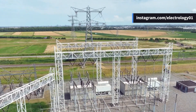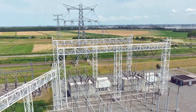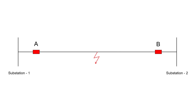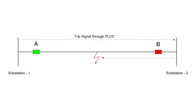Let's understand how this works in fault situations. Imagine a fault occurs in a transmission line. The relays at both ends — Station 1 and Station 2 — must trip their breakers to isolate the fault. But if only one breaker opens, the fault will not be fully cleared. In this situation, the relay at Station 1 detects the fault and sends a direct trip signal through the PLCC to the relay at Station 2.